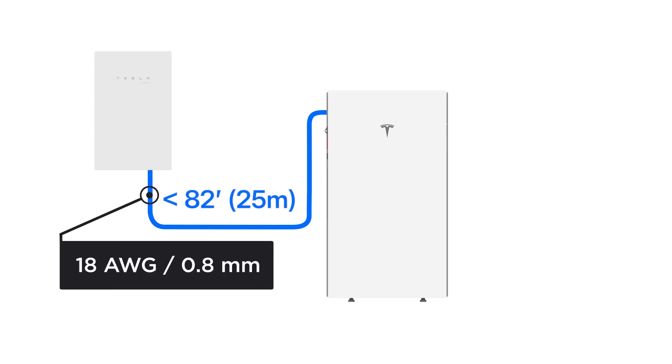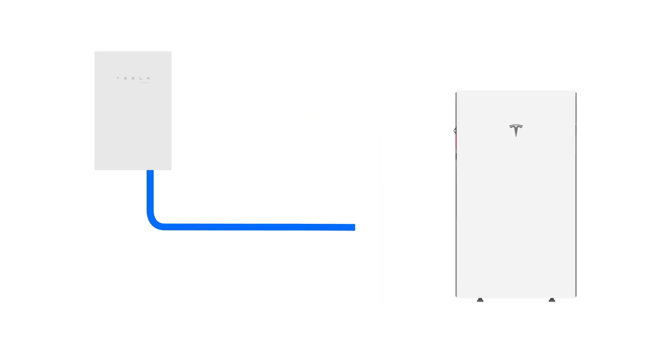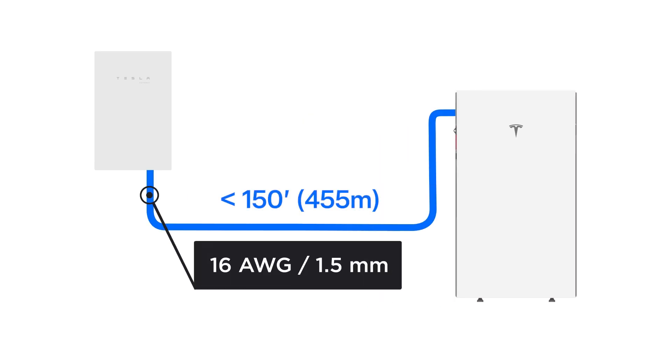Installers can choose from two different-sized communication cables, depending on the distance between components. Thinner wire can be used for shorter runs, while thicker wire is required for longer runs as specified here.